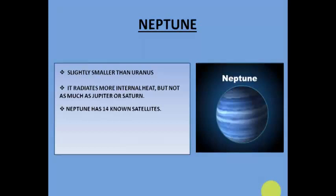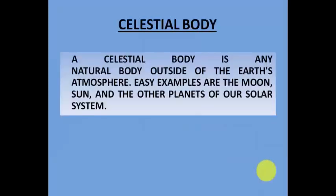A celestial body is any natural body outside the Earth's atmosphere. Easy examples are the Moon, the Sun, and the other planets of our solar system.